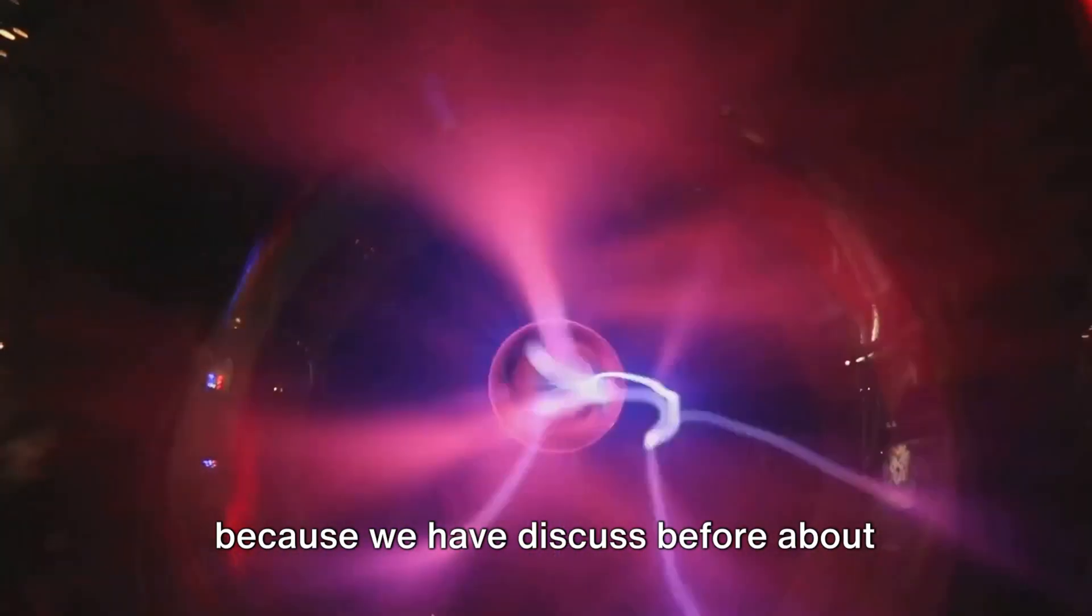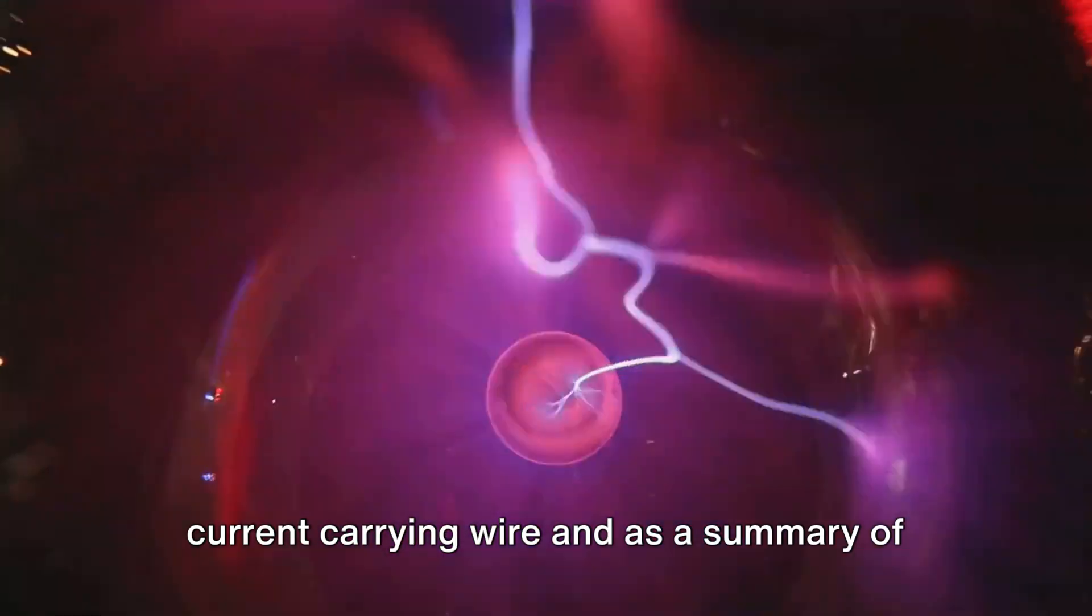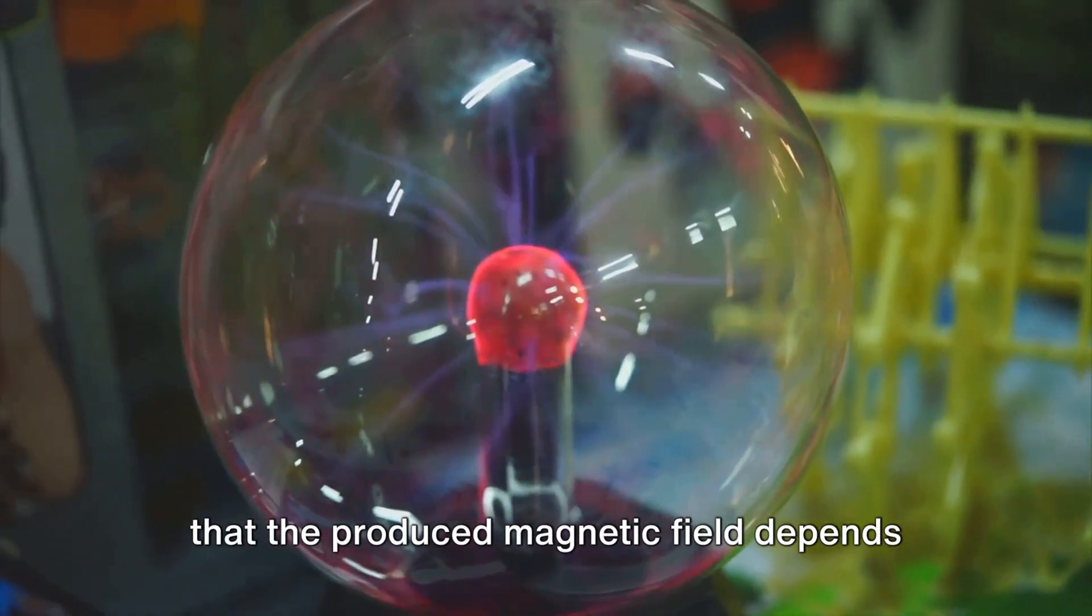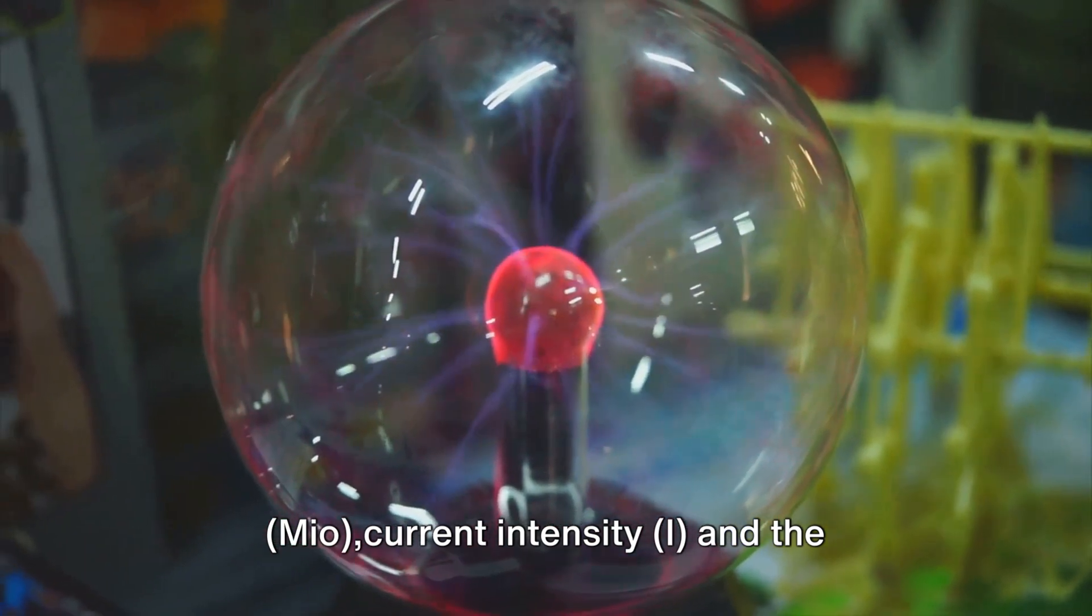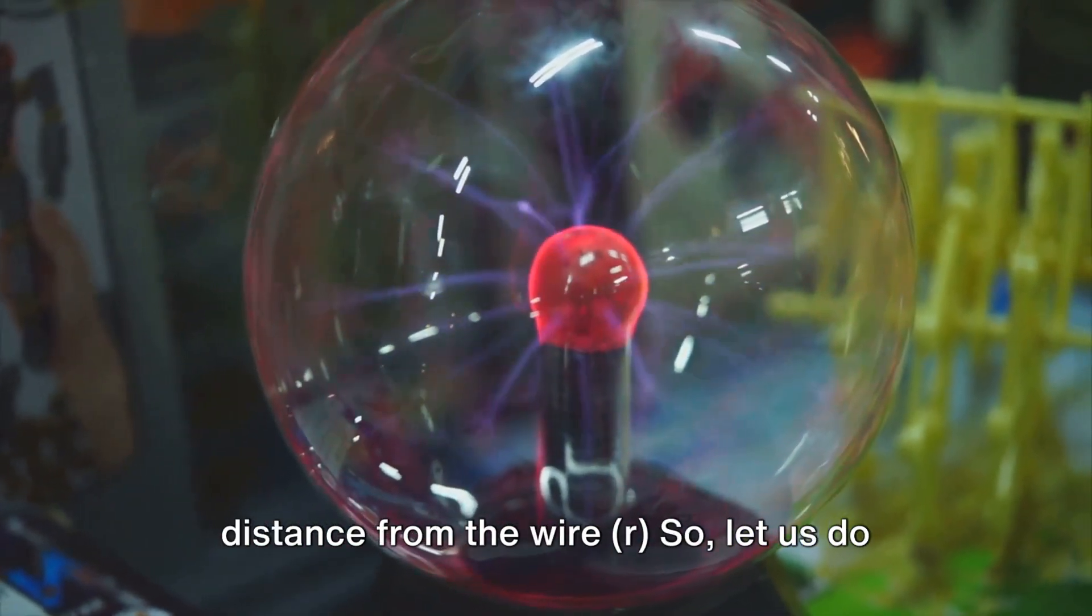Because we have discussed before about current carrying wire, and as a summary of that, the produced magnetic field depends on the magnetic permittivity μ₀, current intensity I, and the distance from the wire R.